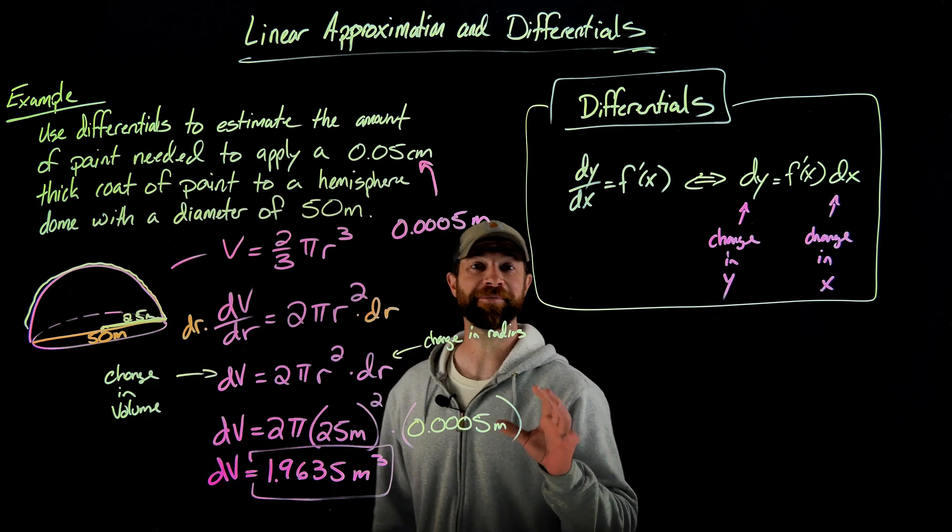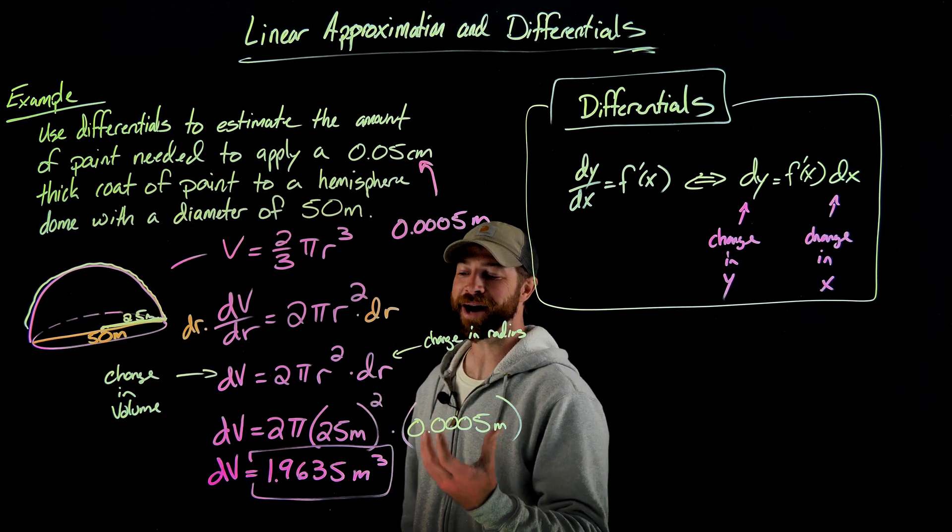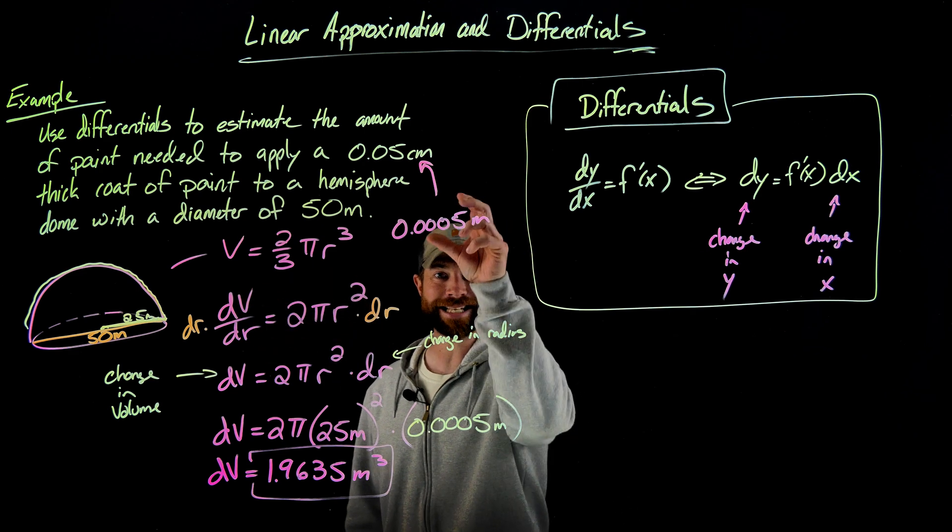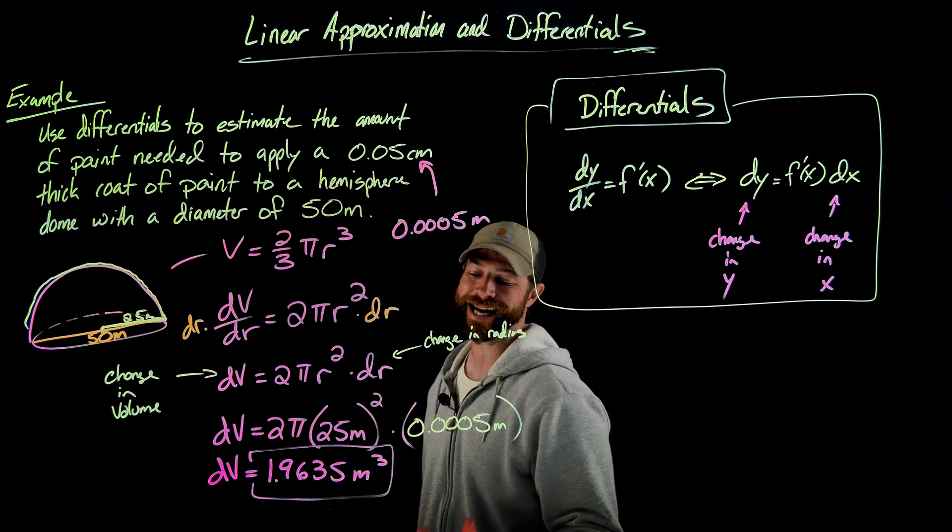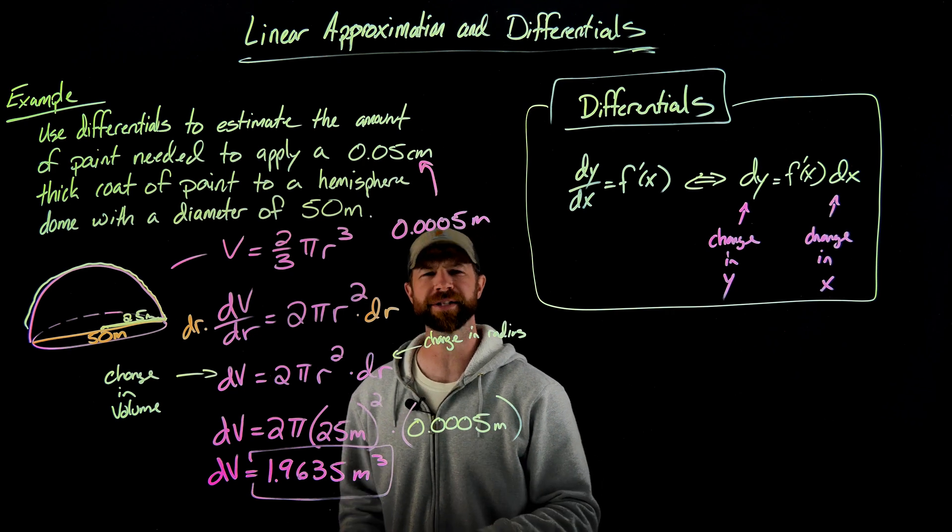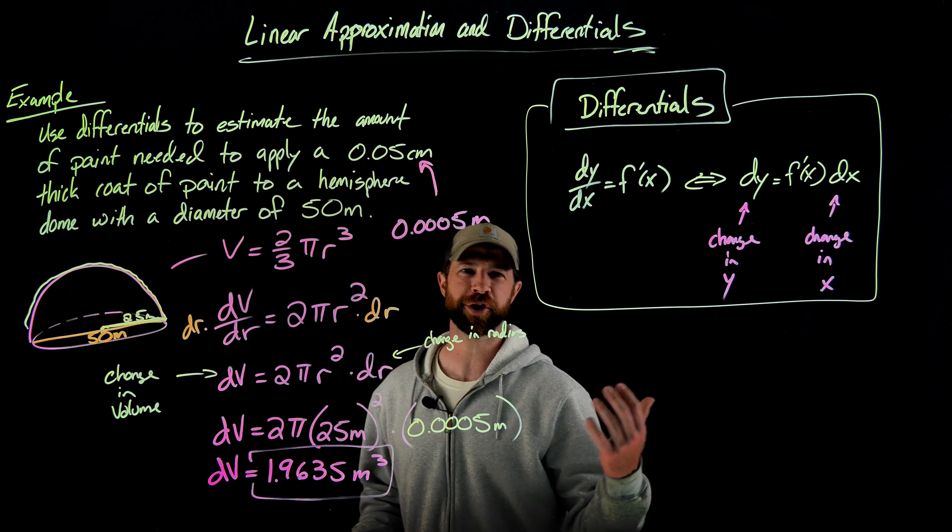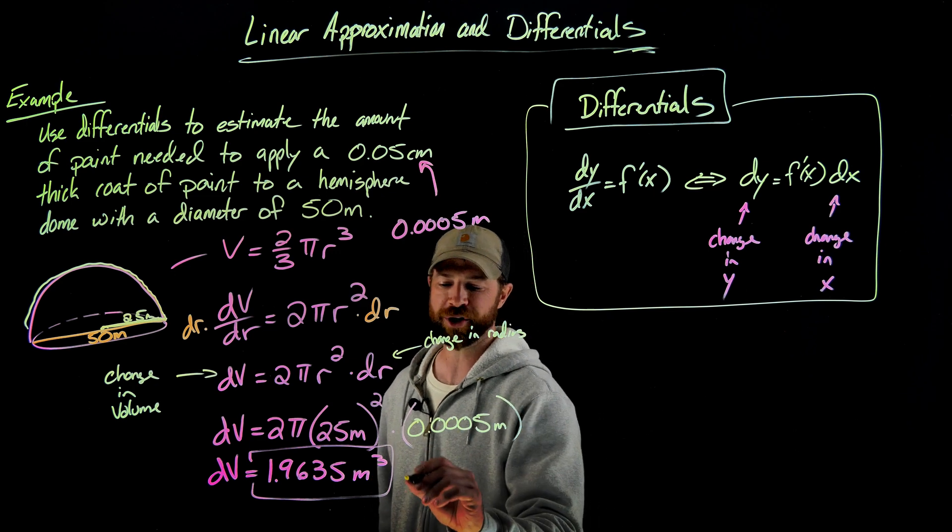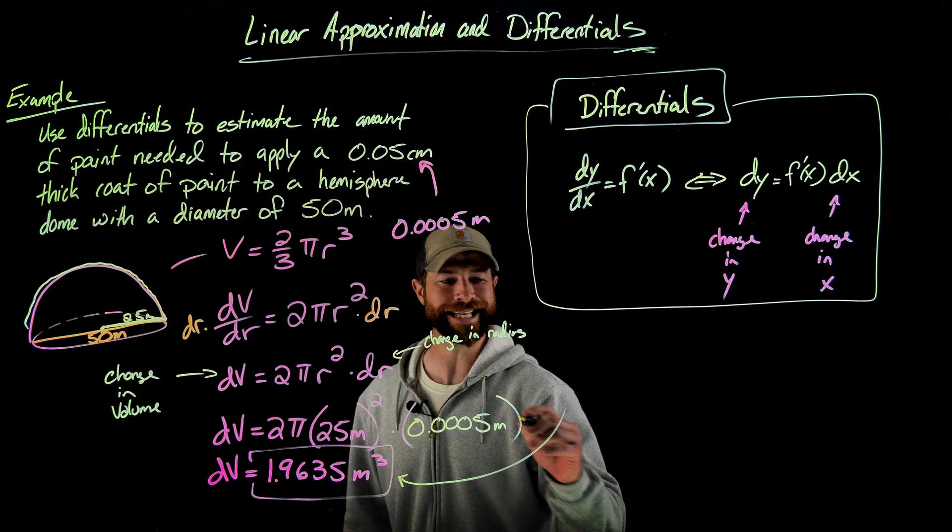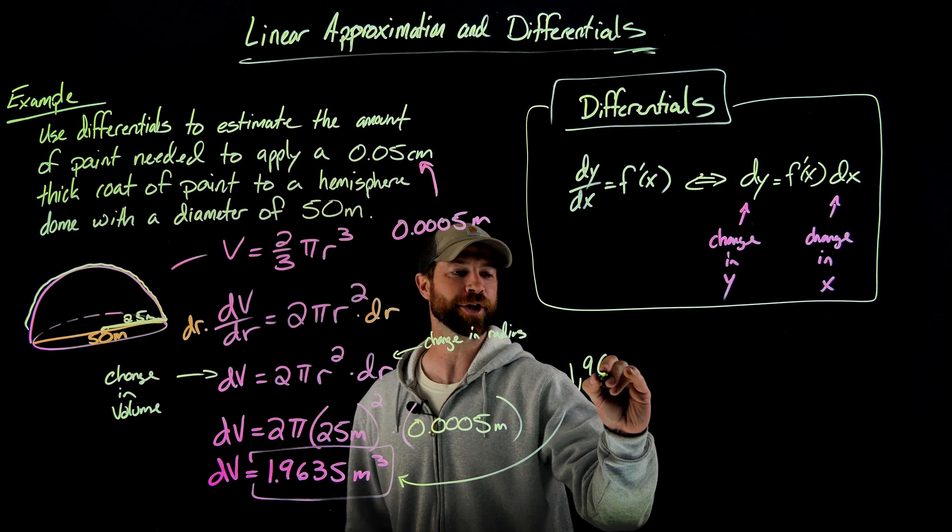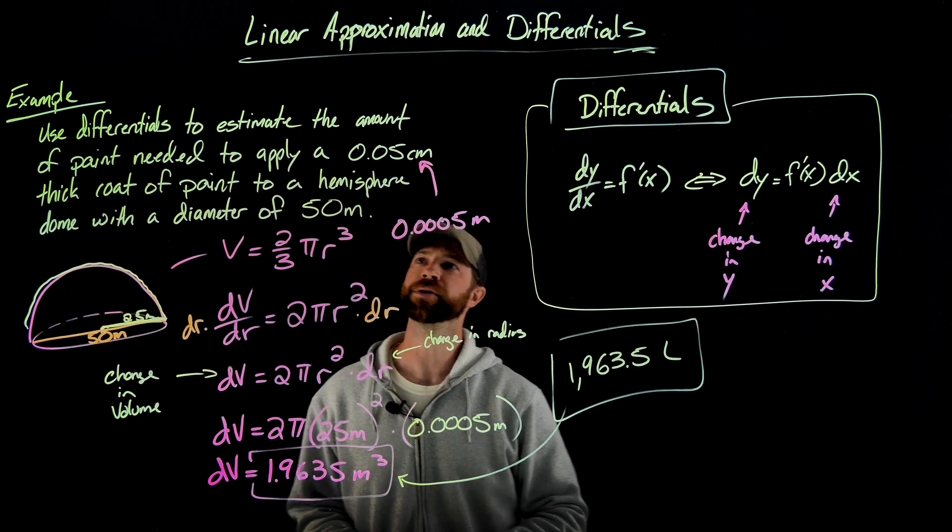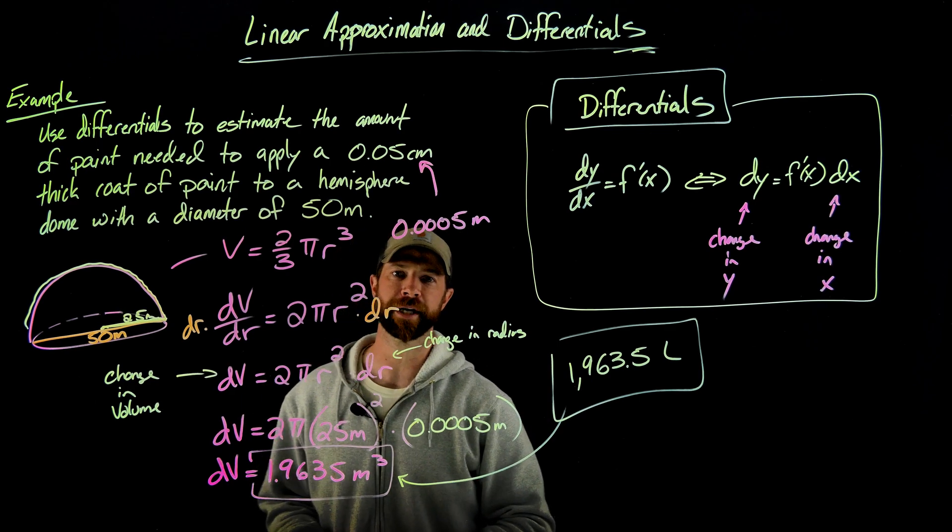So I have my answer. My answer is the amount of paint that I will need to paint this hemisphere dome with this thickness right here is 1.9635 cubic meters. But maybe it might be difficult to go into Sherman-Williams or a paint store and order cubic meters. If I want to translate this into something like liters, this would be 1,963.5 liters of paint are needed to paint this massive object.